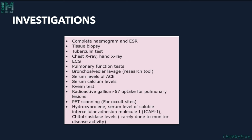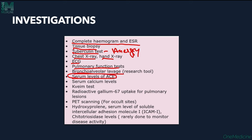Investigations include complete hemogram with ESR, tissue biopsy, tuberculin test (showing anergy), chest X-ray, hand X-ray for small bone involvement, ECG for cardiac involvement, pulmonary function tests, bronchoalveolar lavage, serum ACE levels (raised, released by sarcoidal granulomas), serum calcium levels, Kveim test, radioactive gallium scan for pulmonary lesions, PET scanning, serum hydroxyproline, soluble ICAM-1, and chitintriosidase levels — all used to assess disease activity.